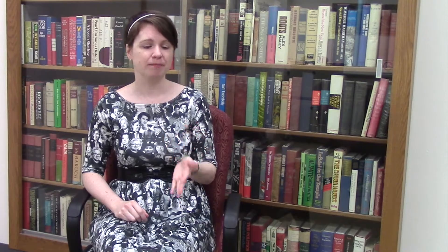You want to describe five major things about your data in a data management plan. The first is what kind of data are you going to create. The second is how are you going to document that data. The third is how are you going to take care of any sensitive data. The fourth is what are you going to do with your data after the end of a project. And the fifth, where applicable, is how are you going to share your data. So let's look at those five different components in more detail.